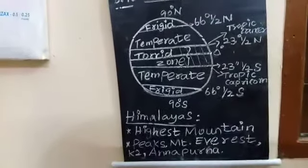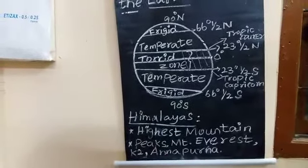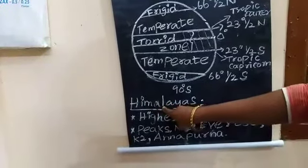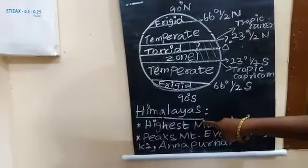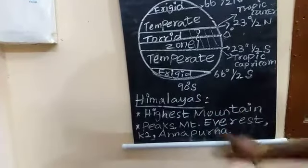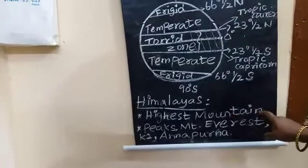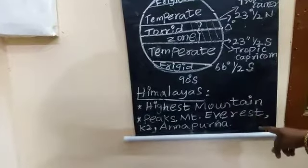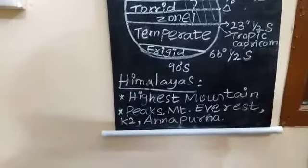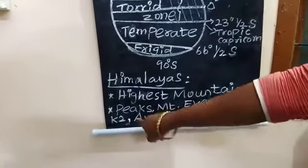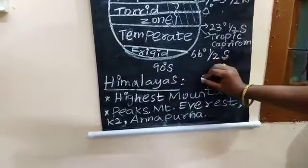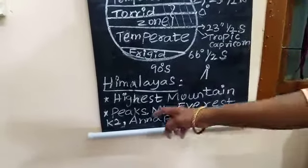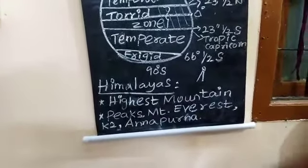The next topic is mountains. The first mountain is called the Himalayas — H-I-M-A-L-A-Y-A-S. The Himalayas are called the highest mountain in the world. Apart from the Himalayas mountain, there are many other famous mountain peaks located at the top places.